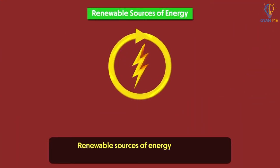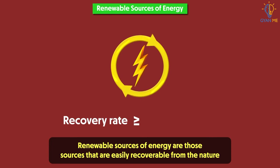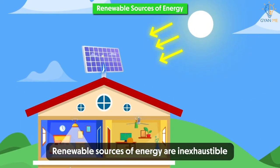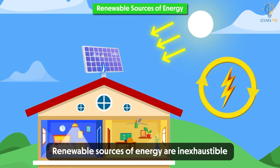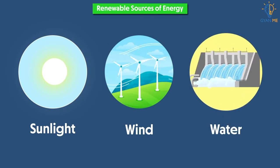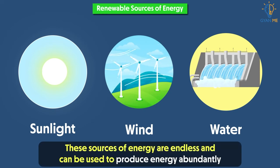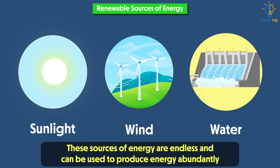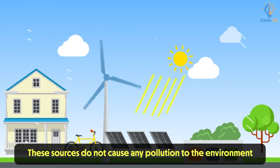Renewable sources of energy are those sources that are easily recoverable from nature. Their recovery rate is either equal to or more than their consumption rate. In other words, renewable sources of energy are inexhaustible — they can be replaced as we use them and can be used to produce energy again and again. For example, sunlight, wind, water, etc. These sources of energy are endless and can be used to produce energy abundantly. In fact, these sources do not cause any pollution to the environment and hence they are eco-friendly.